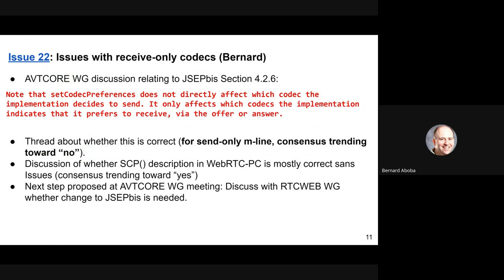This issue came up in ABT core regarding receive-only codecs. We had a discussion of JSEP BIS, which will also come up in the WebRTC PC issues section 4.2.6, where it says that set codec preferences does not directly affect which codec the implementation sends — it only affects which codecs the implementation indicates it prefers to receive in offer/answer. There's a thread going on about whether these two sentences are actually correct.